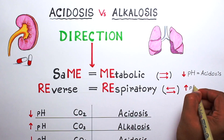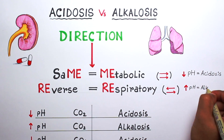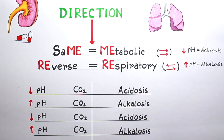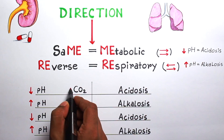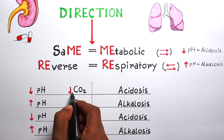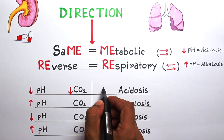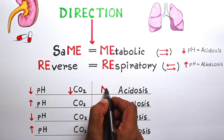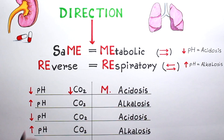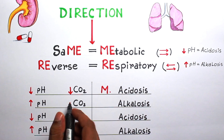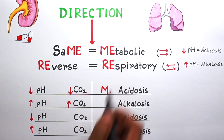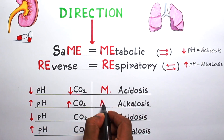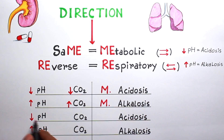As you all know, decreased pH means acidosis and increased pH means alkalosis. Now, if pH is down, it is acidosis. If CO2 is also down, they are in the same direction, so it will be metabolic acidosis. If pH and CO2 are both up, then it will be metabolic alkalosis.